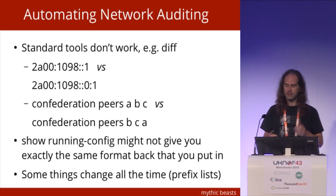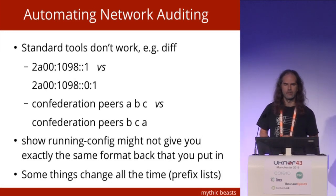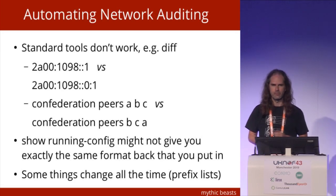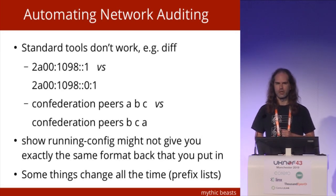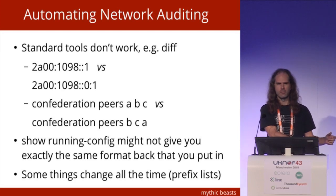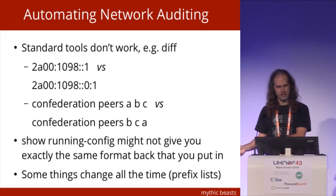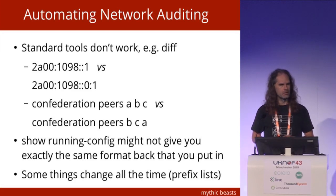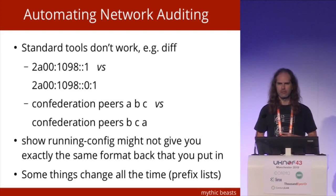When we started doing this, there are nice standard tools like DIFF, but a DIFF doesn't work, because IPv6 addresses can be written down in multiple different ways. You might spit out one format from your config management, and when you ask your router what the config really is, you get a different format back, but they're really the same thing. Things get reordered. Basically, the problem is two configs that are the same are not necessarily textually the same.